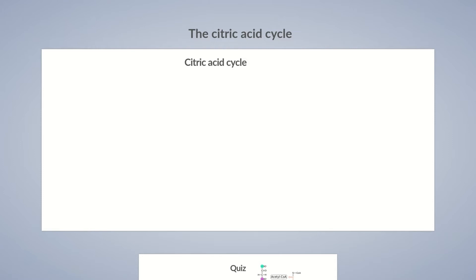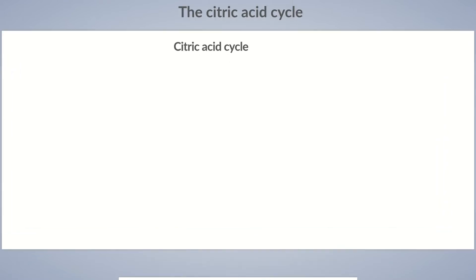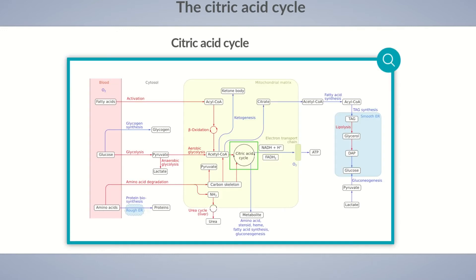The citric acid cycle is an essential metabolic pathway occurring in the mitochondrial matrix of aerobically active cells. Its intermediates serve as substrates for various anabolic processes in the cell.